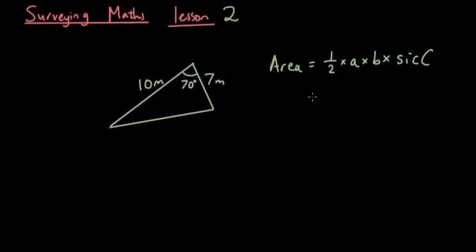So the area is basically equal to half times, now what is a and b? A and b is simply the two numbers you're given, so the two lengths you're given, which is 10 and 7. These are your a and b.